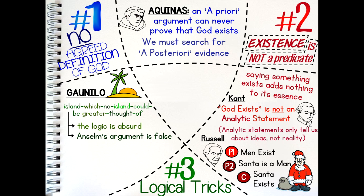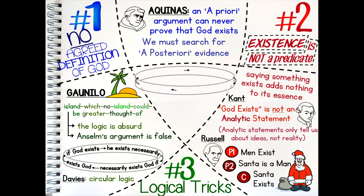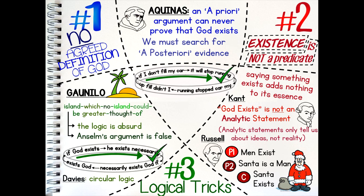Brian Davis claimed that the argument effectively uses circular logic, which could not be trusted. If we look at Norman Malcolm's argument, he moves from saying 'if God exists, he exists necessarily' to saying that God exists necessarily, therefore God exists. For example, I could argue: if I don't fill my car with petrol, it will stop running; my car has stopped running, therefore I must not have filled it with petrol. This is a logical fallacy, since the argument only works one way. The first statement may well be true, but it doesn't necessarily follow that the reverse is also true. There could be plenty of other reasons why my car stopped working.